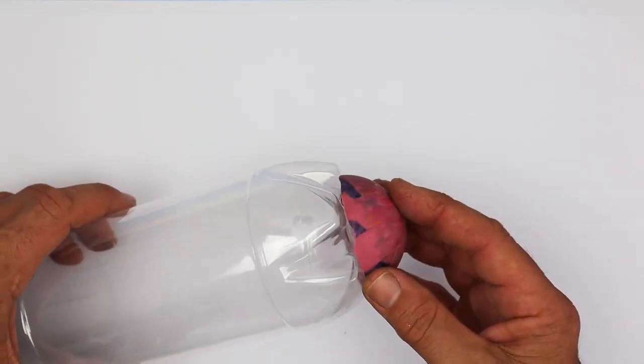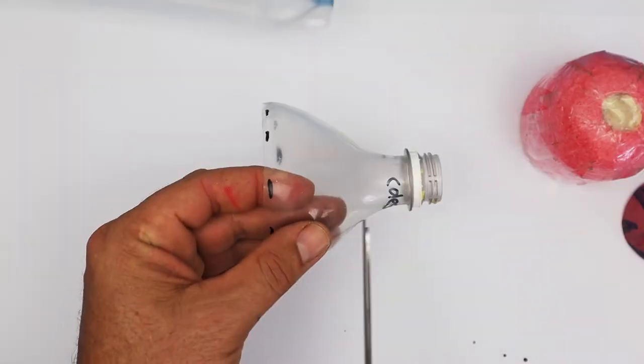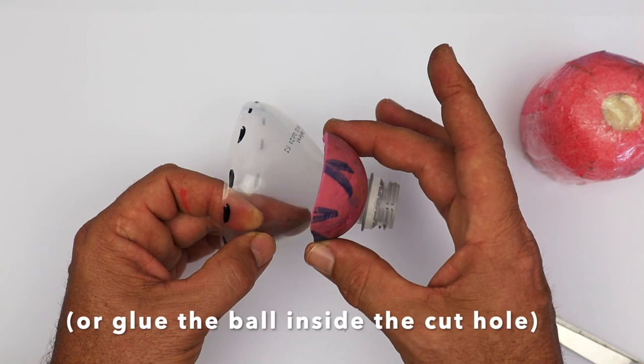For a really neat look, ask an adult to cut the neck off a bottle and then tape the ball over the top. It gives that really rounded nose cone look.